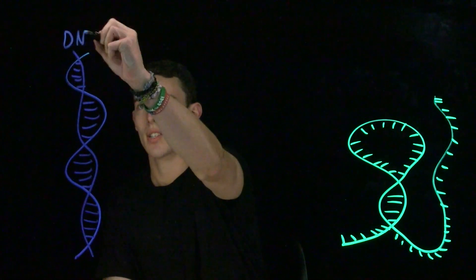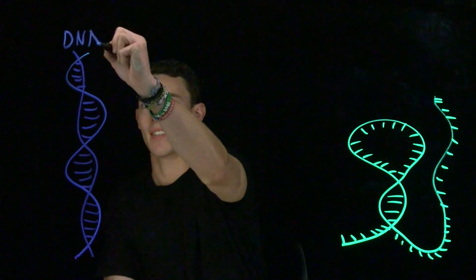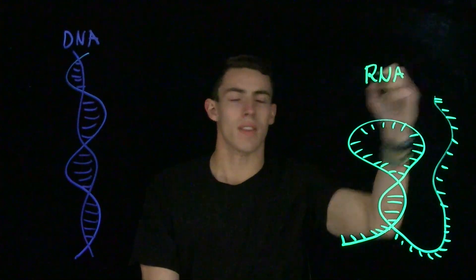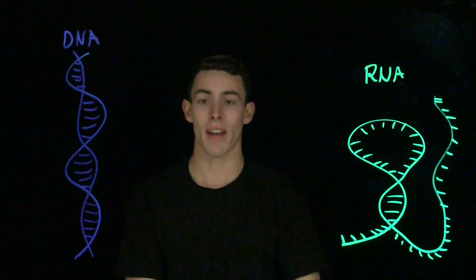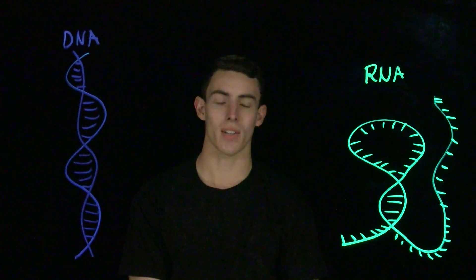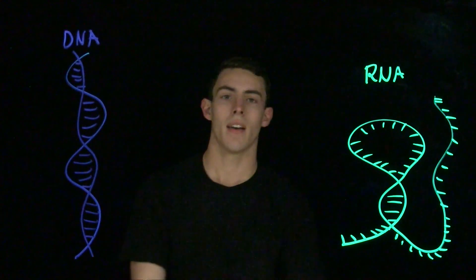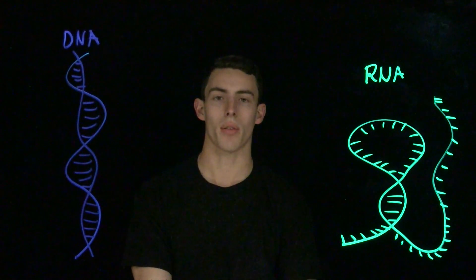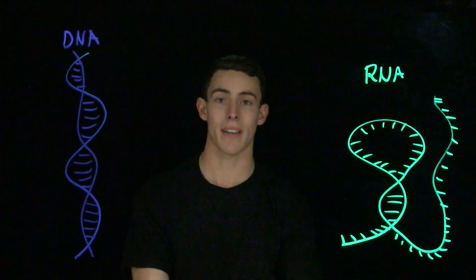DNA, or deoxyribonucleic acid, and RNA, or ribonucleic acid, are the two nucleic acids that store genetic information in your cells. They store the genetic code in your cell through their molecular structures, which we'll look at now.